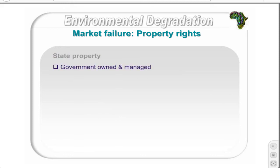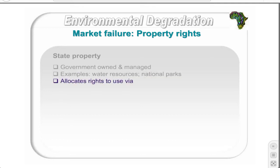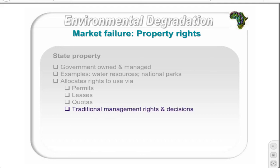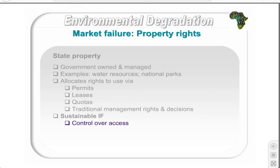State property is government owned and managed. Examples include water resources and national parks. The government allows access through permits for hunting, fishing, mining, and firewood collection; leases for farming, timber rights, and safari areas; quotas for fishing, timber, and wildlife; and acknowledgement of traditional management rights. This type of property right is sustainable if there is control over access, effective monitoring of resource use, no corruption among government officials, and low population pressures in surrounding areas.